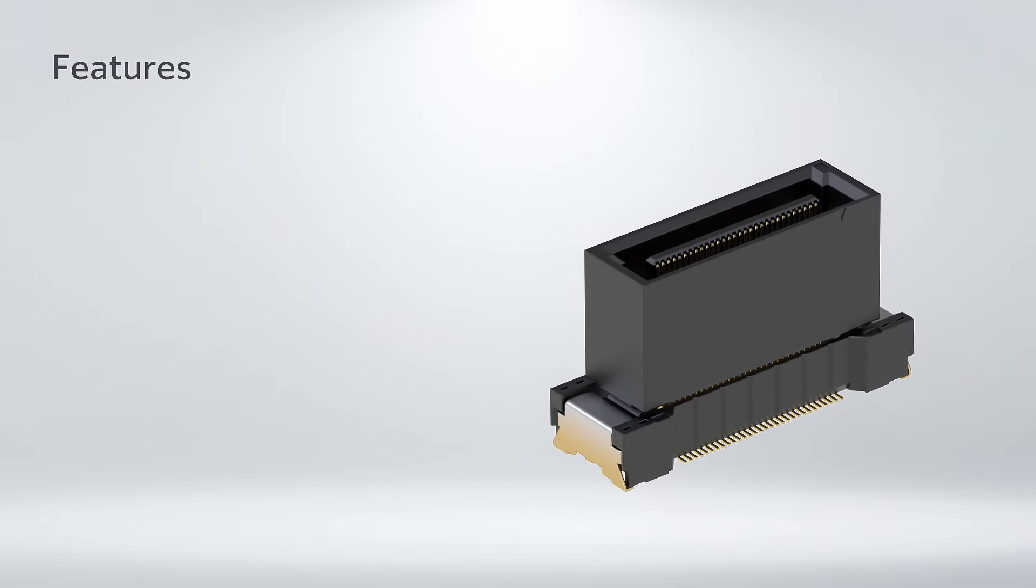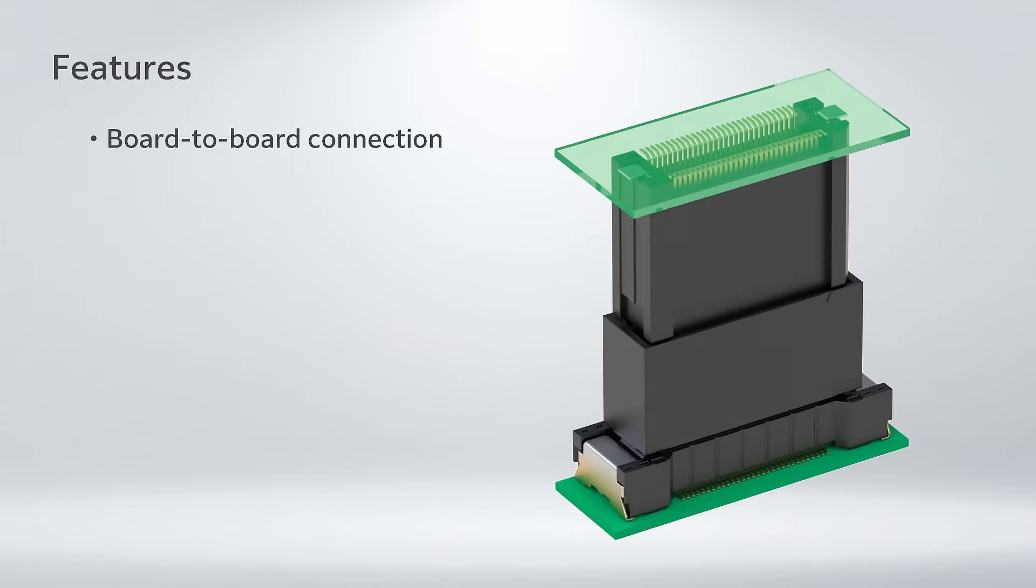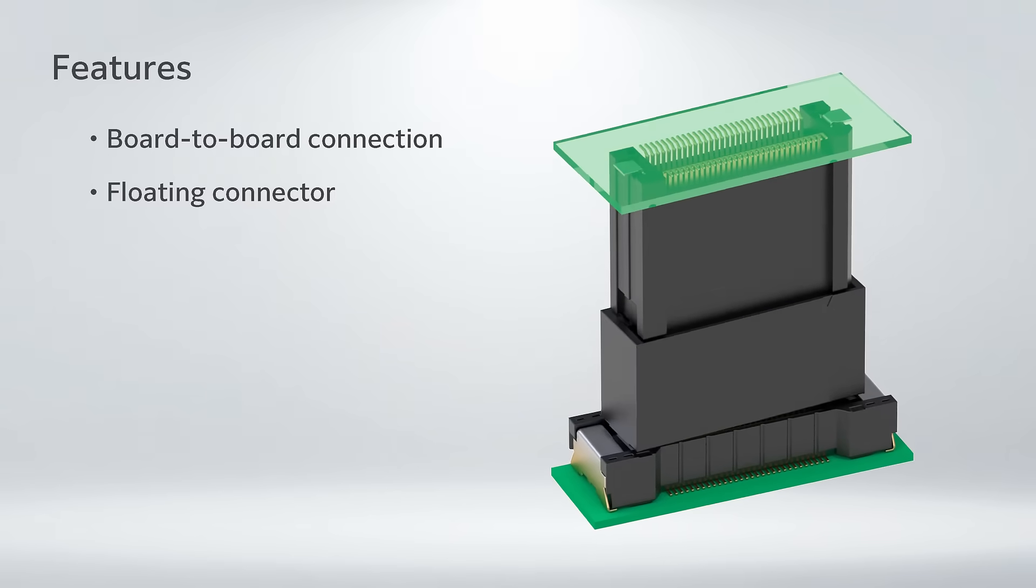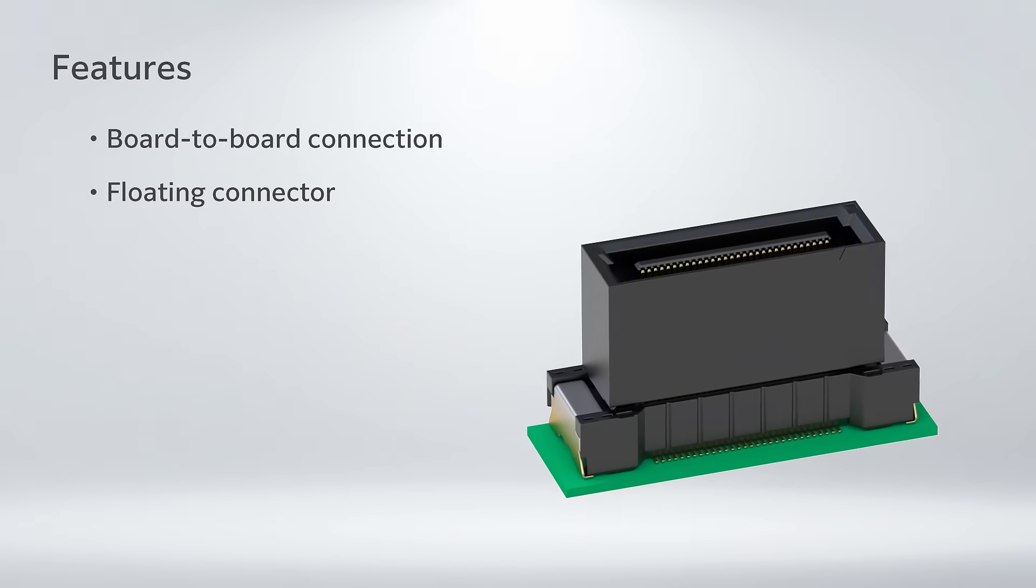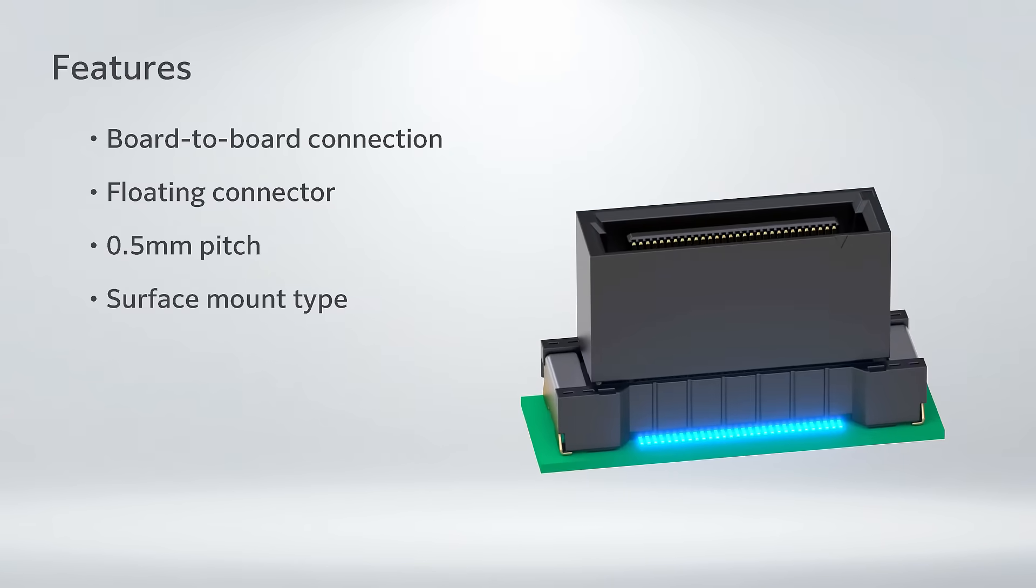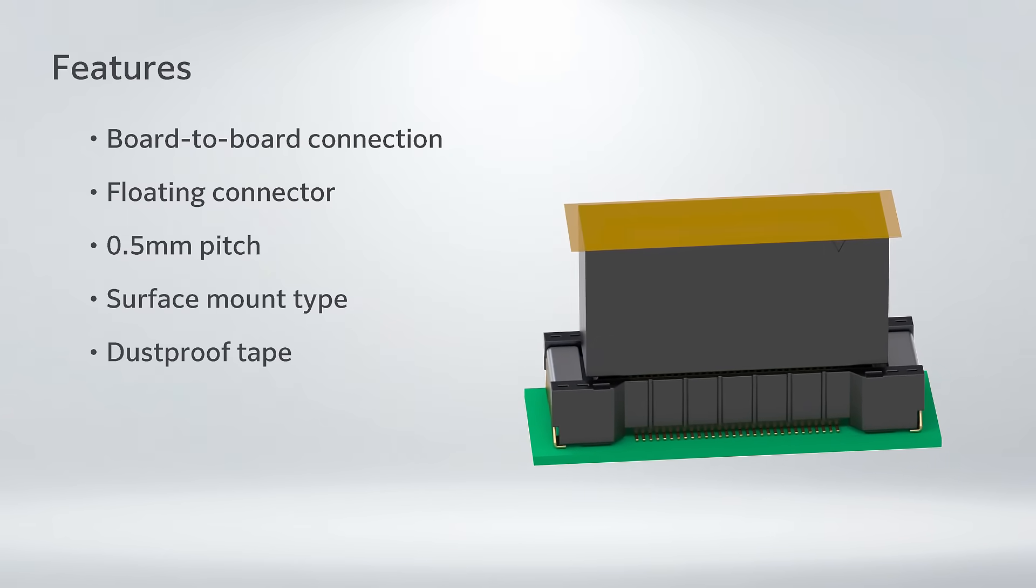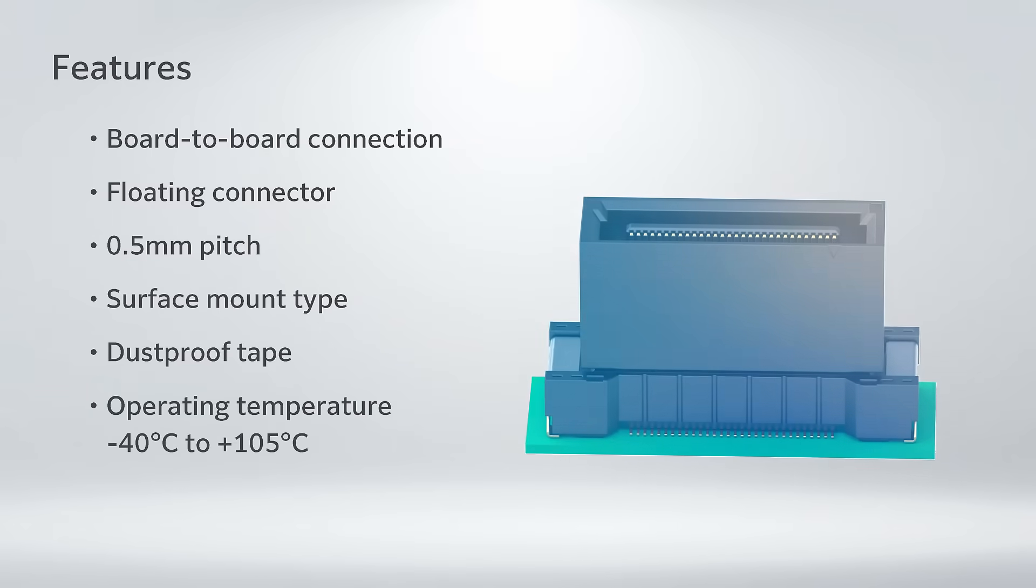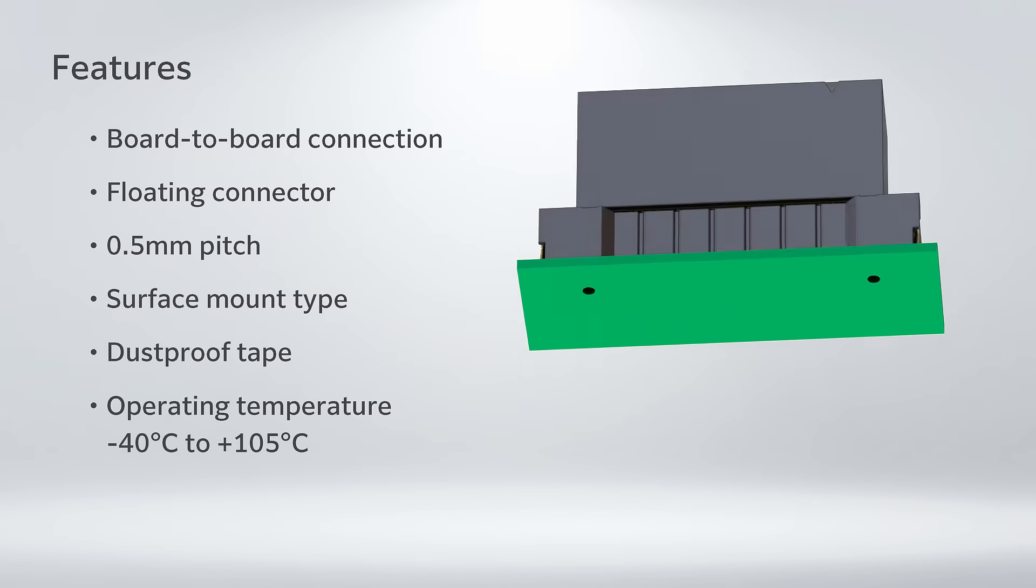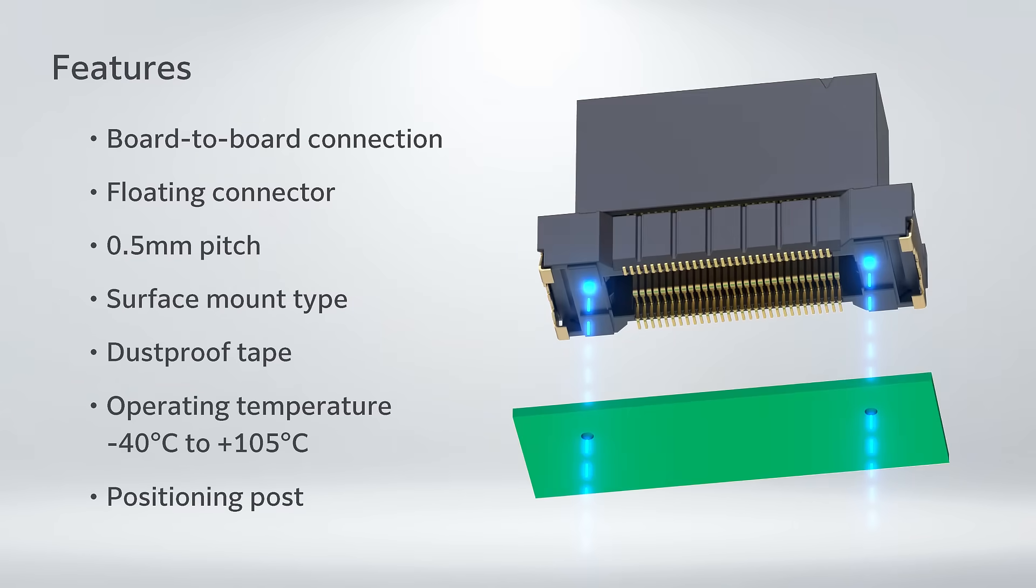DT High Stack type features a board-to-board connection, floating connector, 0.5mm pitch, and surface mount type with dustproof tape. The operating temperature corresponds to minus 40 degrees to 105 degrees. A positioning post is available.